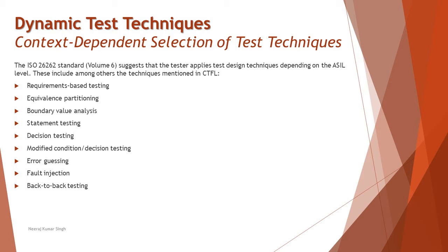Similarly, when it comes to automotive testing, all these different techniques are very well compatible and can be applied to see if they are effective. But if they are not applicable, you have your own specific standards to follow. As per the ISO 26262 standard, volume 6, a tester applies test design techniques depending on the ASIL level — automotive safety integrity level — which helps determine, based on level A, B, C, or D, which technique will be most reliable and suitable at that point.